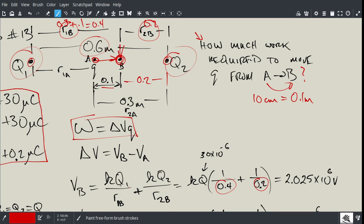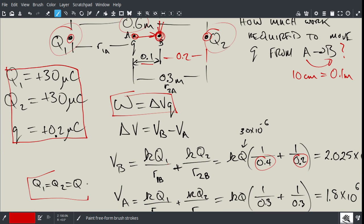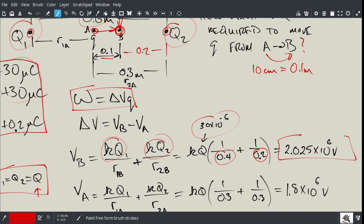Here's the interesting thing. If the Qs were different, I'd have to do the calculation separately with my calculator. However, there's one extra simplification. Because the two Qs are the same, Q1 equals Q2—they're both positive 30 microcoulombs—I can factor out Q. What I'm left with inside the brackets is 1 over 0.4 plus 1 over 0.2. I can stick in the value of positive 30 for Q and multiply by 10 to the power of 9, and I get this voltage for the voltage at B, or the electric potential at point B.